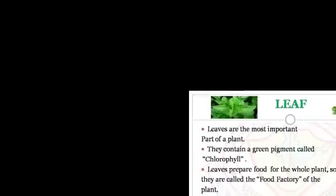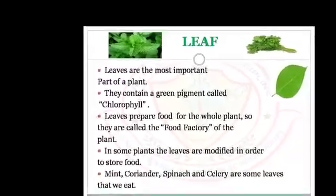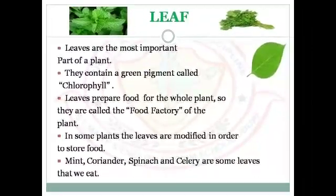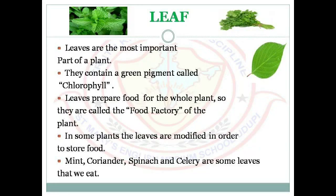Let's learn about leaves. Leaves are the most important part of a plant. They contain a green pigment called chlorophyll. Leaves prepare food for the whole plant, so they are called the food factory of the plant. In some plants, leaves are modified to store food. Mint, coriander, spinach, and celery are some leaves that we eat.